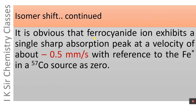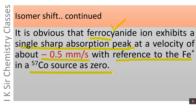Ferrocyanide ion exhibits a single sharp absorption peak at a Doppler velocity of about minus 0.5 mm per second, with reference to the excited Fe nucleus in a cobalt-57 source, whose isomer shift is taken to be 0.